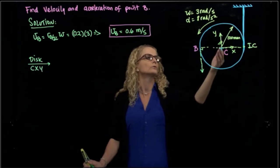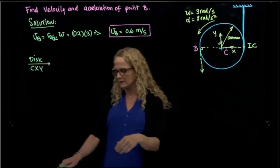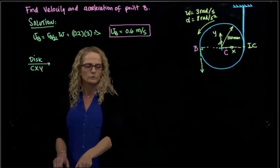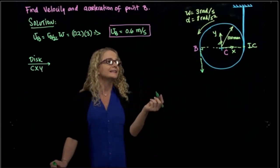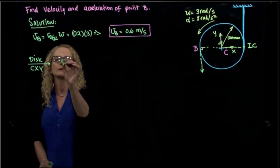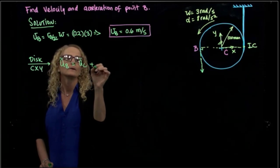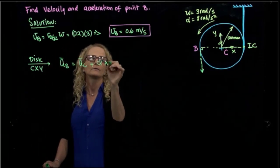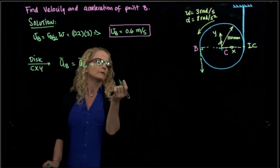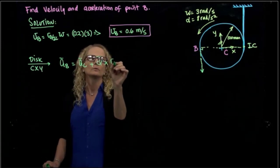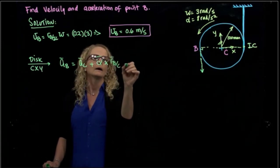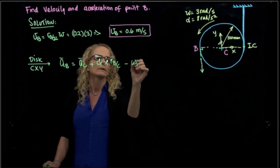As I said, I invite you to do the same problem by using instantaneous center of rotation, but I just wanted to do a different approach. In this case, if we want to calculate the acceleration using point C, we have our formula, which is: this is the angular acceleration, the distance between B and C, and minus omega squared.